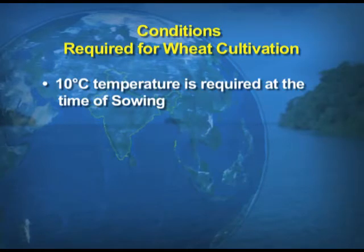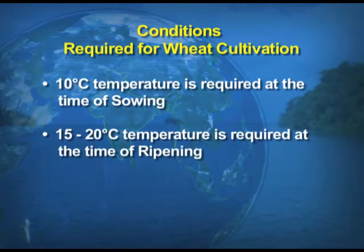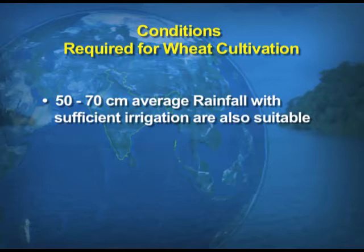Wheat accounts for 14% of the total gross cropped area — much less than the area under rice. The climatic conditions required: 10 degrees Celsius at the time of sowing, and 15 to 20 degrees at the time of ripening. Rainfall required is very low — 50 to 70 centimeters annual rainfall — but with sufficient irrigation, these areas are best suited for wheat production.